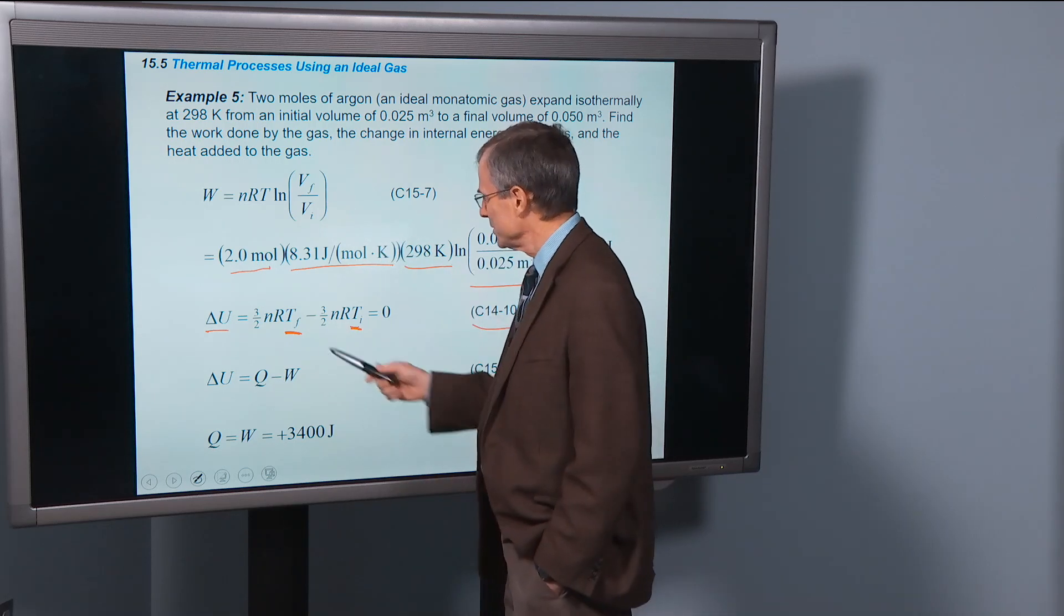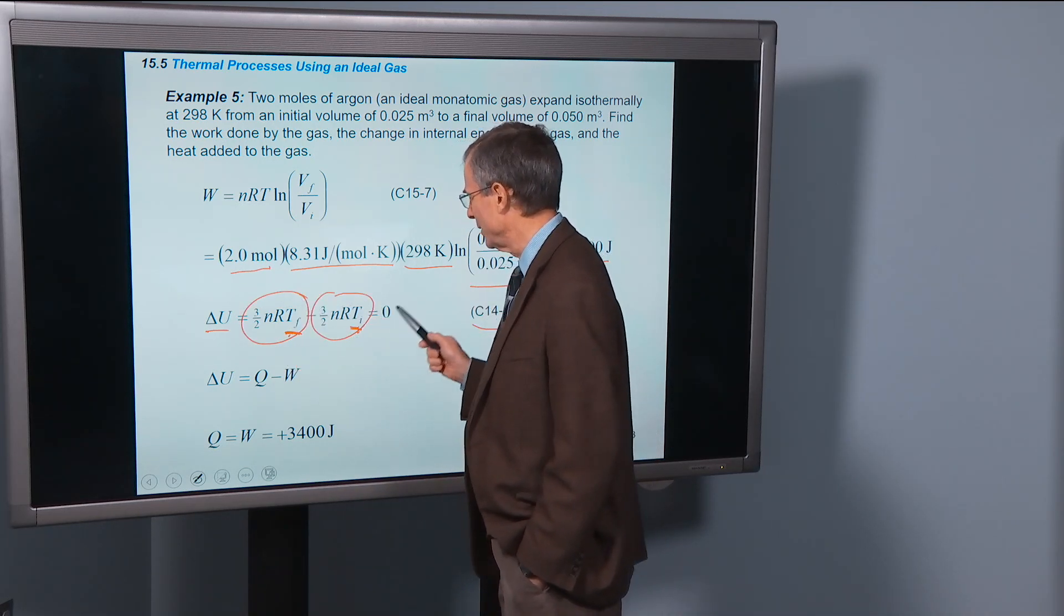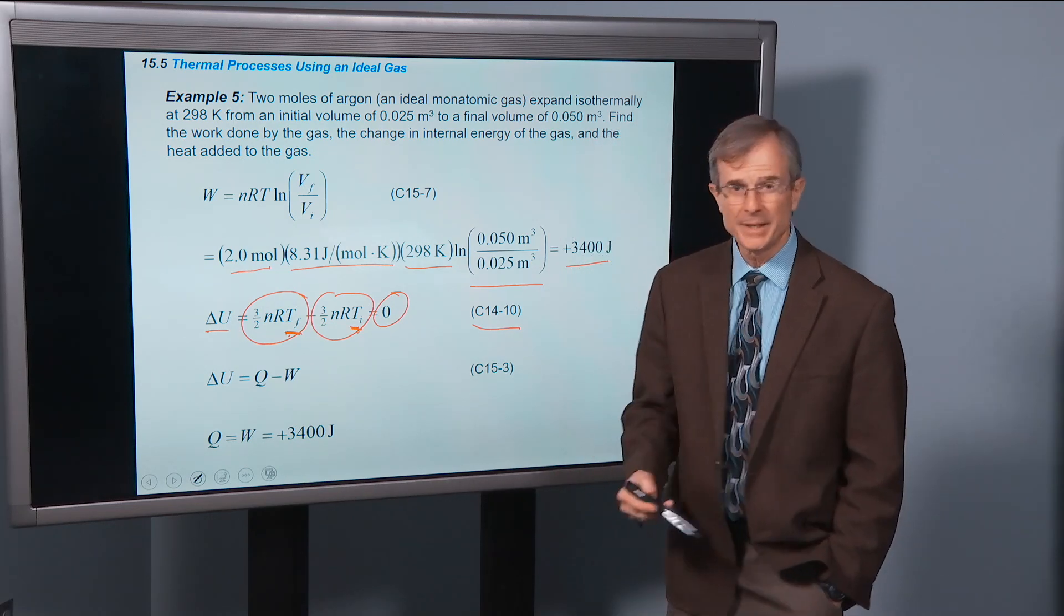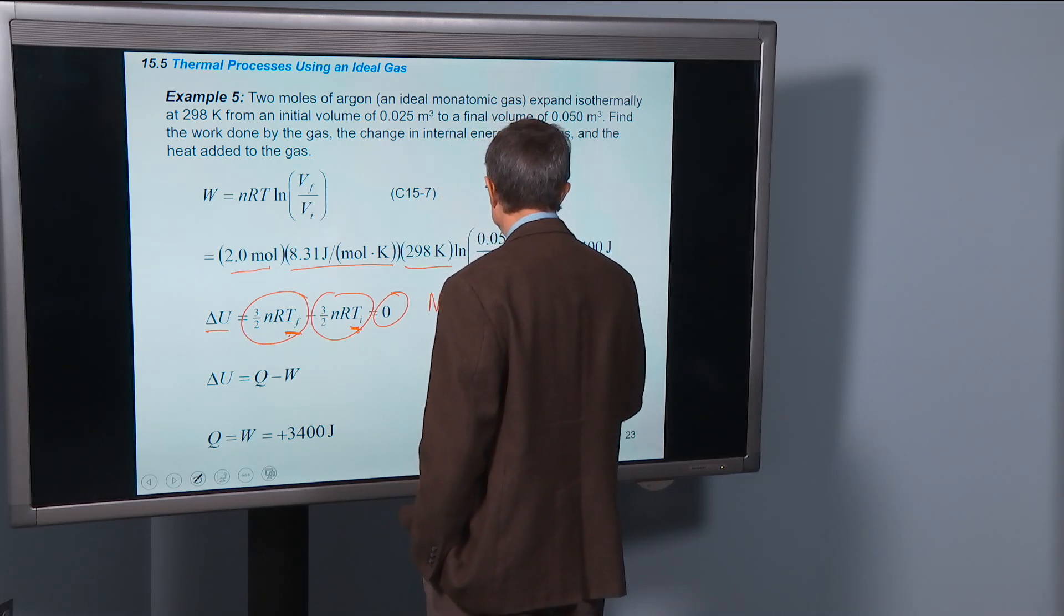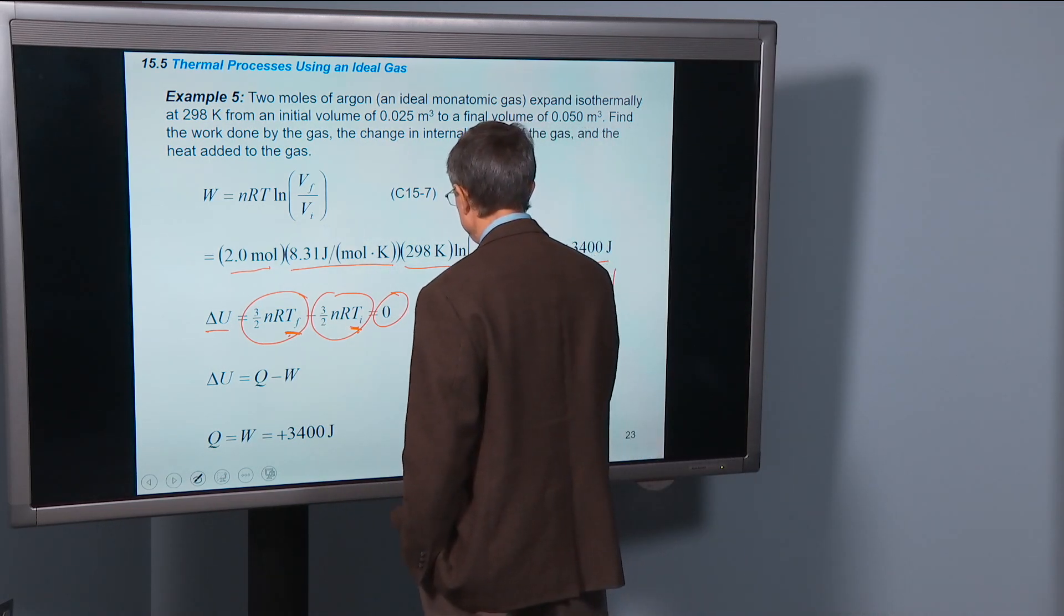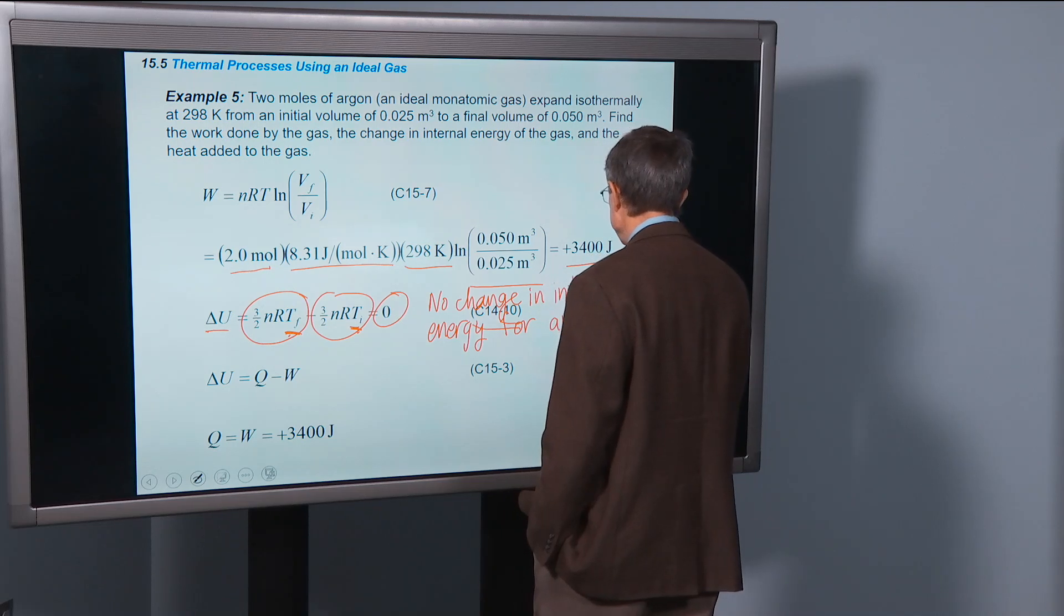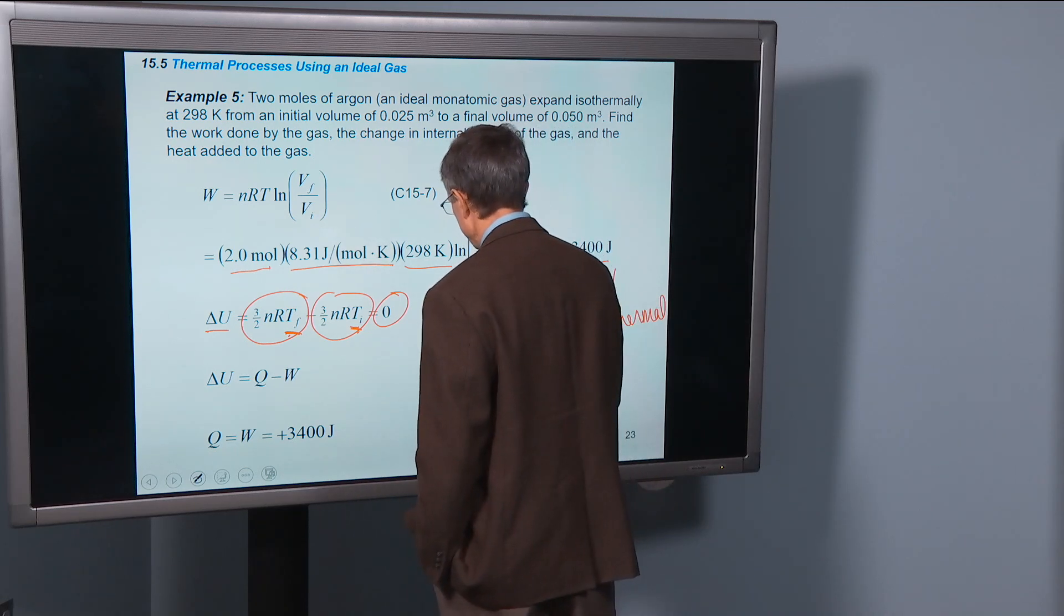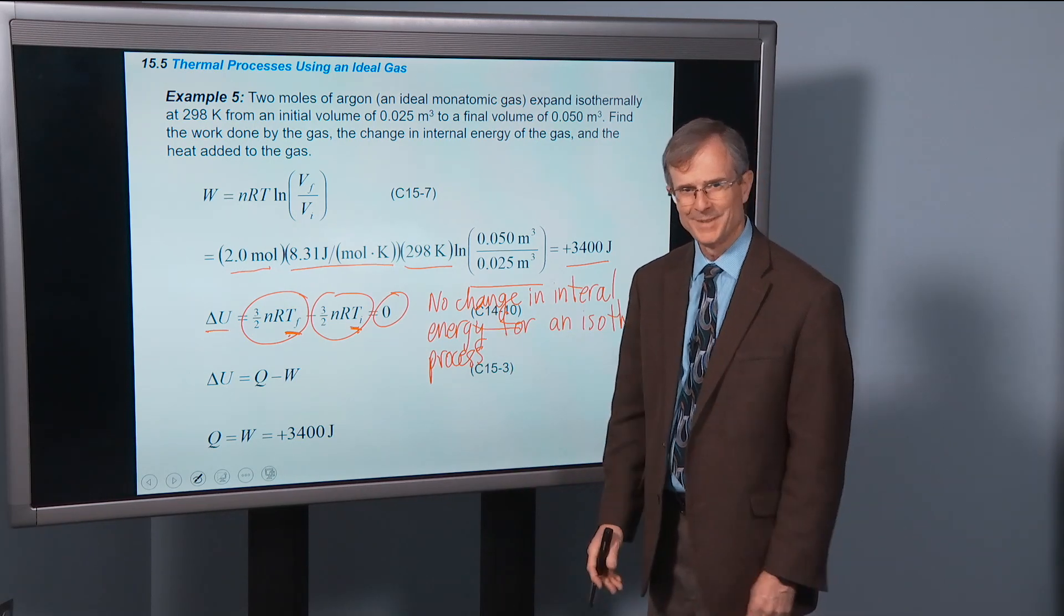So if the final temperature is equal to the initial temperature, then this term is exactly the same as that term. And there's no change in the internal energy for an isothermal process. That you can take to the bank. There's no change in internal energy for an isothermal process. And that could be an isothermal expansion or a contraction.